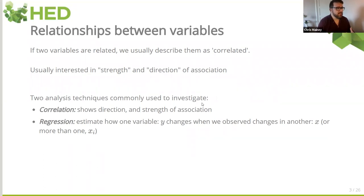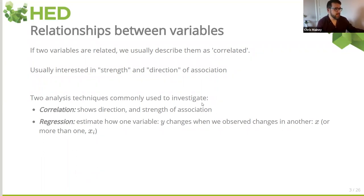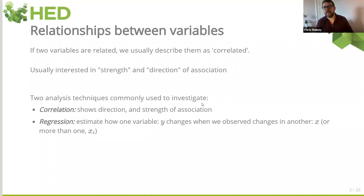The way we generally consider a correlation is usually the strength of it — how tightly they are linked together — and the direction of that association. There are two common approaches. We're in a frequentist framework here. Correlation is really just about trying to show how closely related two variables are in terms of strength, whereas regression gives us an estimate of one or more predictors and how much they affect a particular outcome. We can also diagnose areas in a regression where it doesn't fit very well. So really regression is the more powerful of the two, but for context we'll have a quick look at correlation first.